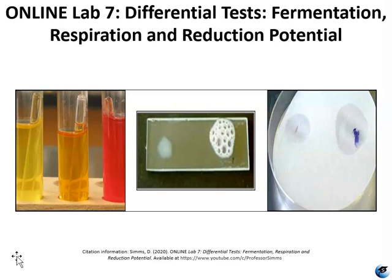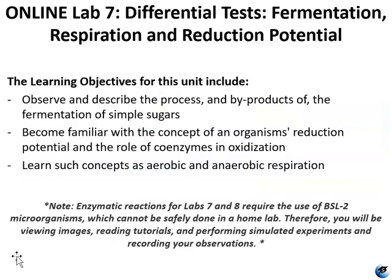If you're a student currently enrolled in this course, please consult the syllabus and course Moodle site for assignments, quizzes, due dates, and other course information. The learning objectives for this unit include observing and describing the processes and byproducts of fermentation of simple sugars and carbohydrates, becoming familiar with the concept of an organism's reduction potential and the role of coenzymes in oxidation, and learning such concepts as aerobic and anaerobic respiration. Please note that the biochemical and enzymatic reactions included in labs seven and eight require the use of BSL-2 microbes, and that can't be done safely at a home lab, so we're not doing any wet lab procedures for seven or eight, but you are going to be looking at videos and simulations and interpreting data that way.